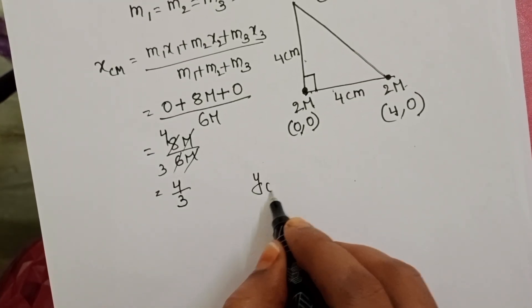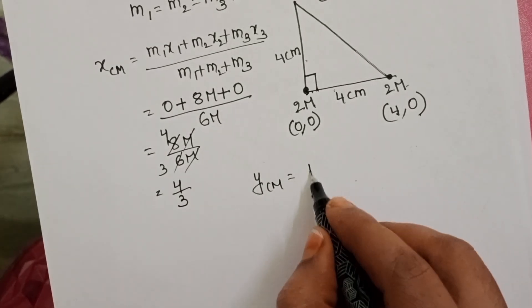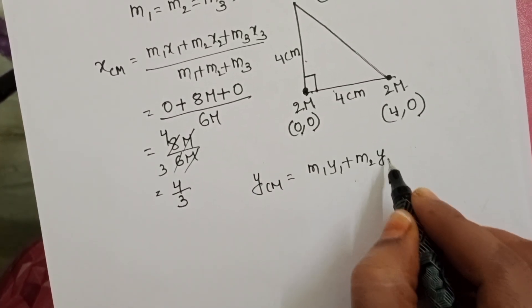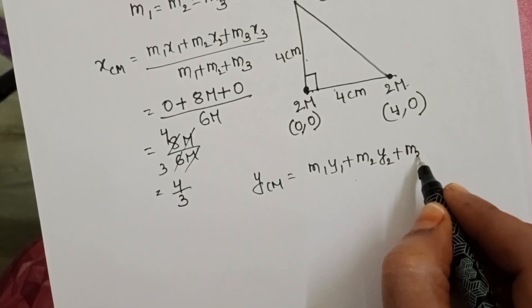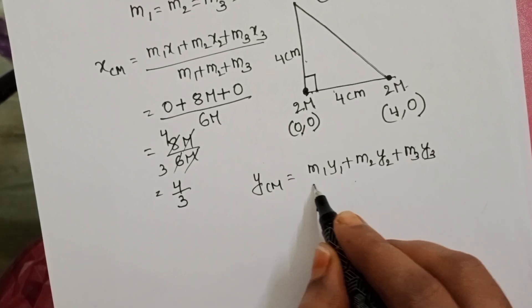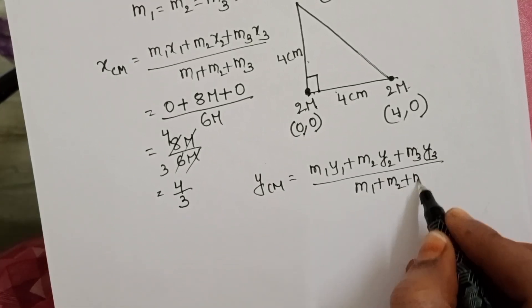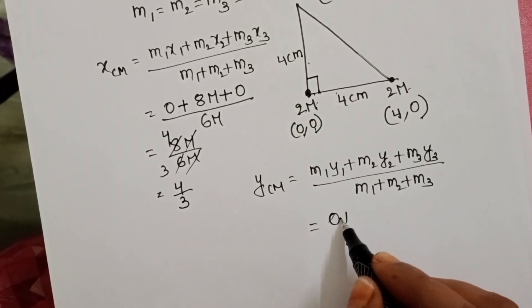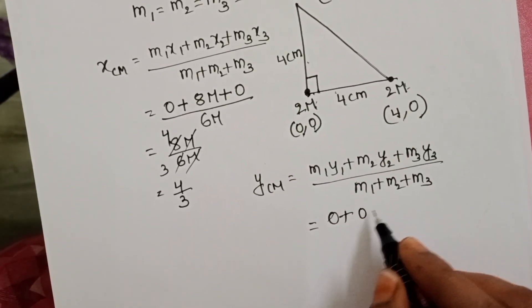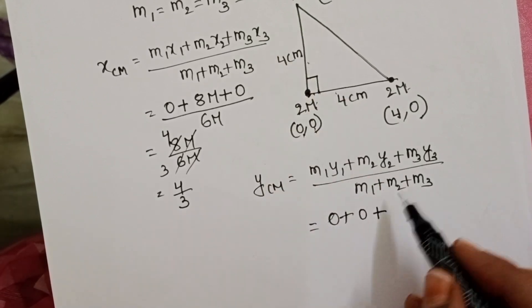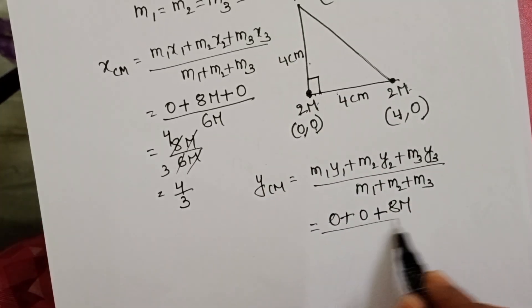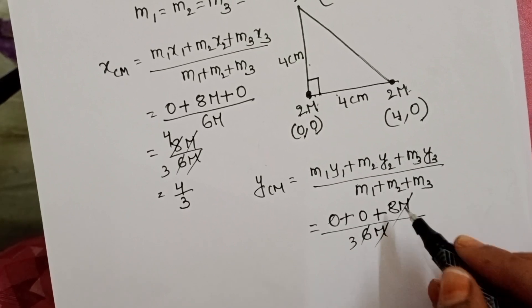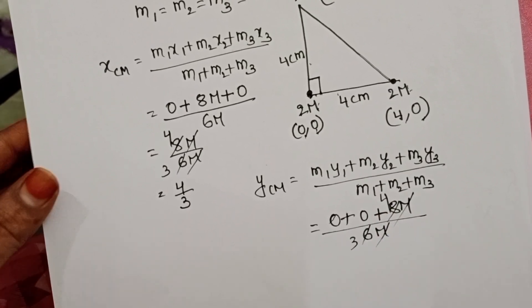And next, the position of center of mass of the system along the y-direction is m1 y1 plus m2 y2 plus m3 y3 by m1 plus m2 plus m3. 2m into 0, 0 plus here also 0 and 2m into 4, 8m by total mass is 6m. Here also m gets cancelled, 4 by 3.